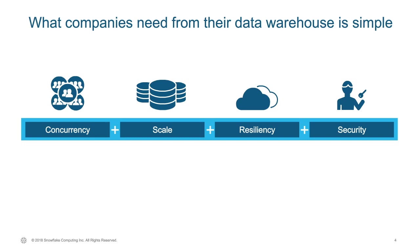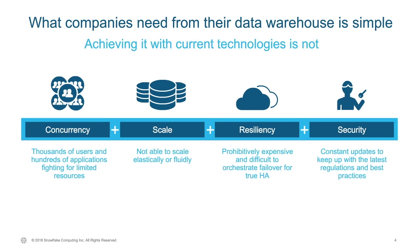If you think about the challenges companies are facing today with the warehouses they use for analytics, they fall into four categories: concurrency, scale, resiliency, and security. It's problematic to address all requirements from these four categories with existing data warehousing technology. The goal for concurrency is to support thousands of users and sometimes hundreds of different applications in a large organization that need to connect to the enterprise's data warehouse, but they all compete for a limited amount of resources.